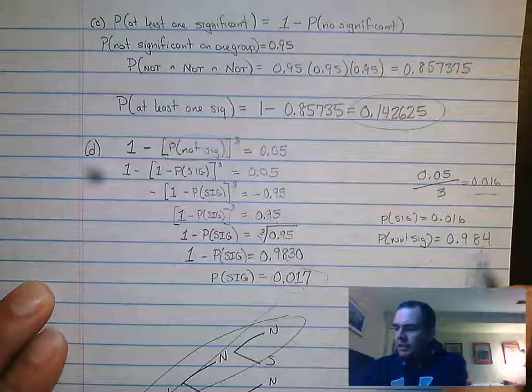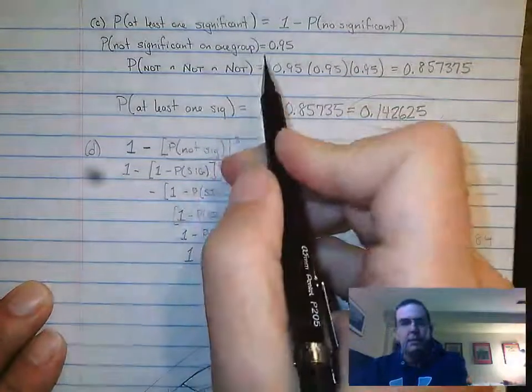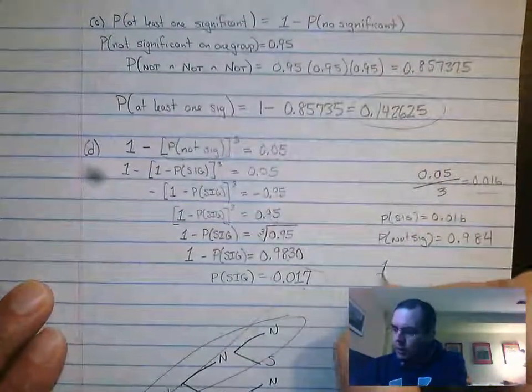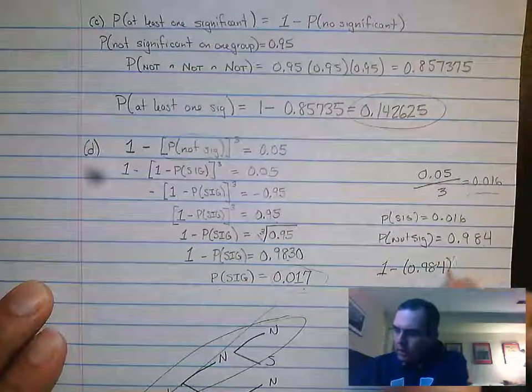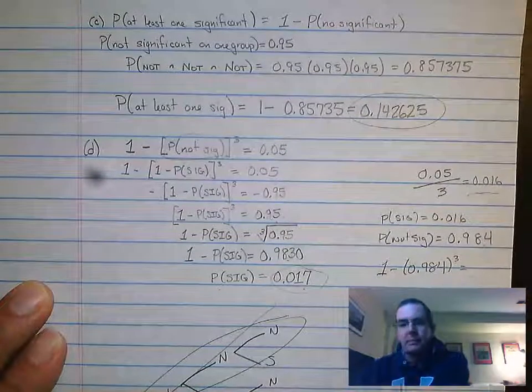And what I would do in this case is I would go ahead and rerun like we did up here. I would do 1 minus 0.984 cubed and I'd see what that comes out to be.